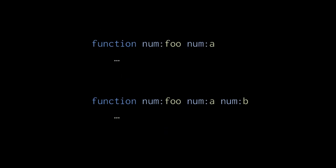In static languages, to make a function foo that accepts either one number argument or two number arguments, we create two separate versions of foo, one with a single number parameter and one with two number parameters.